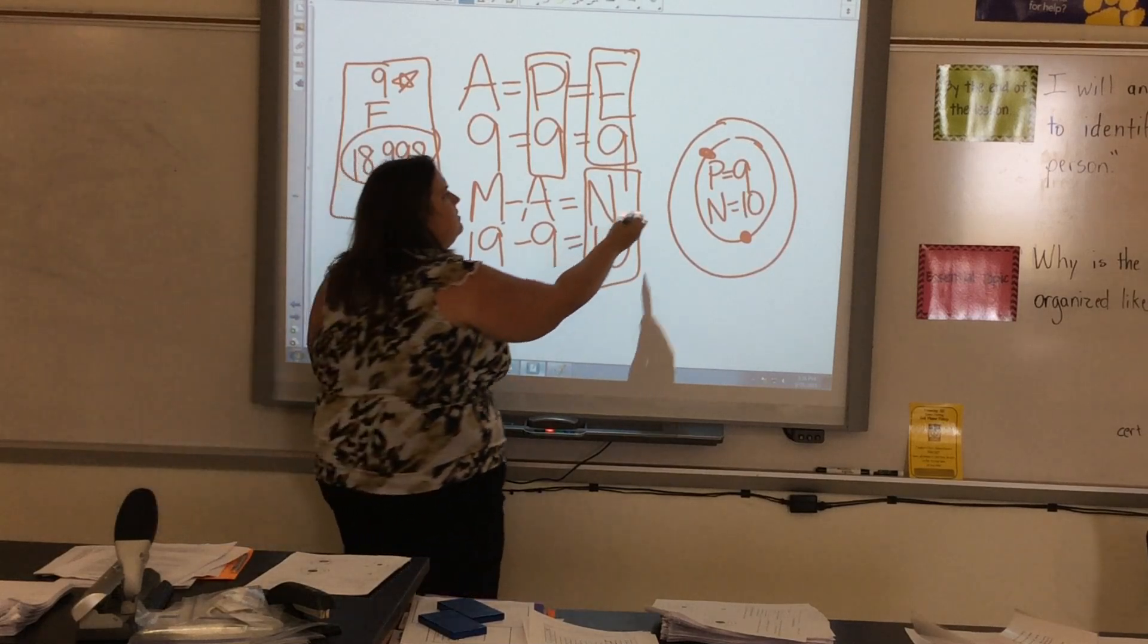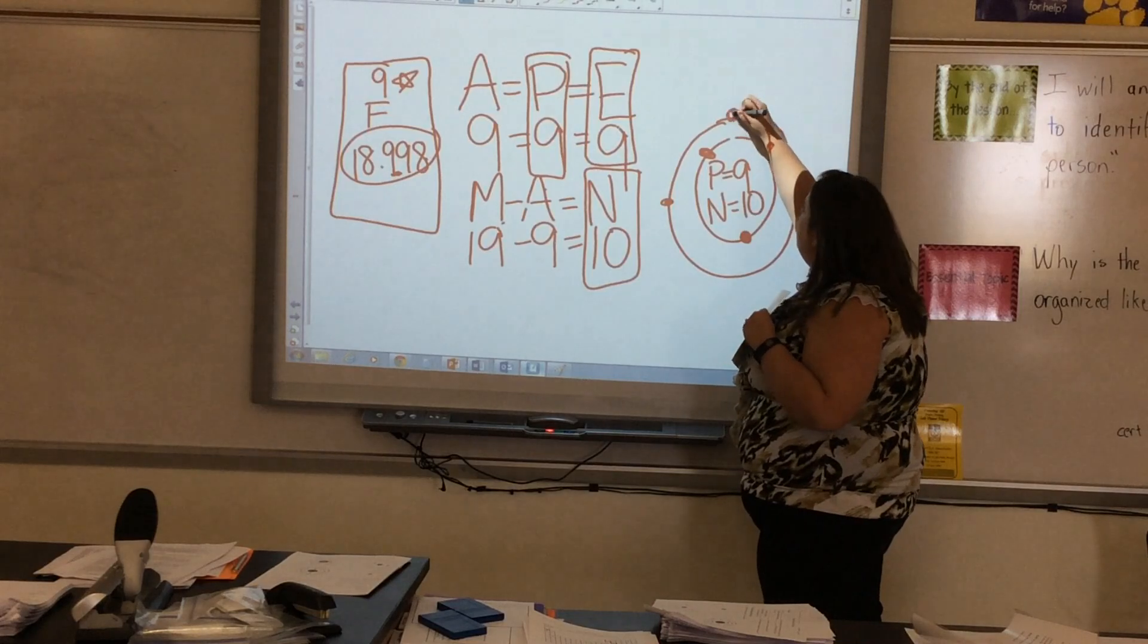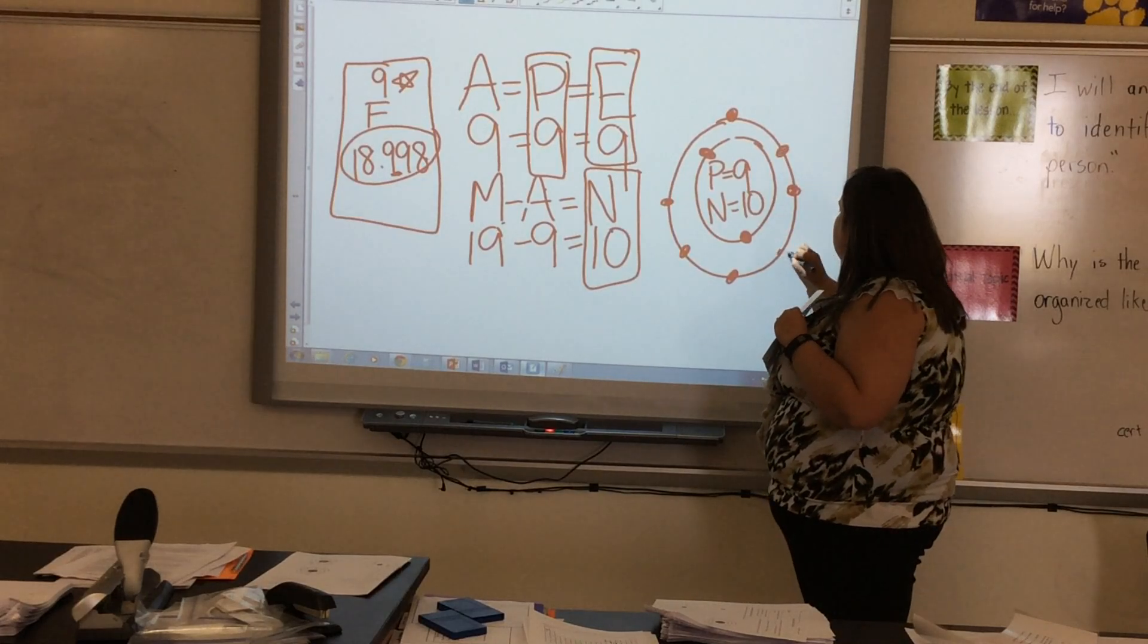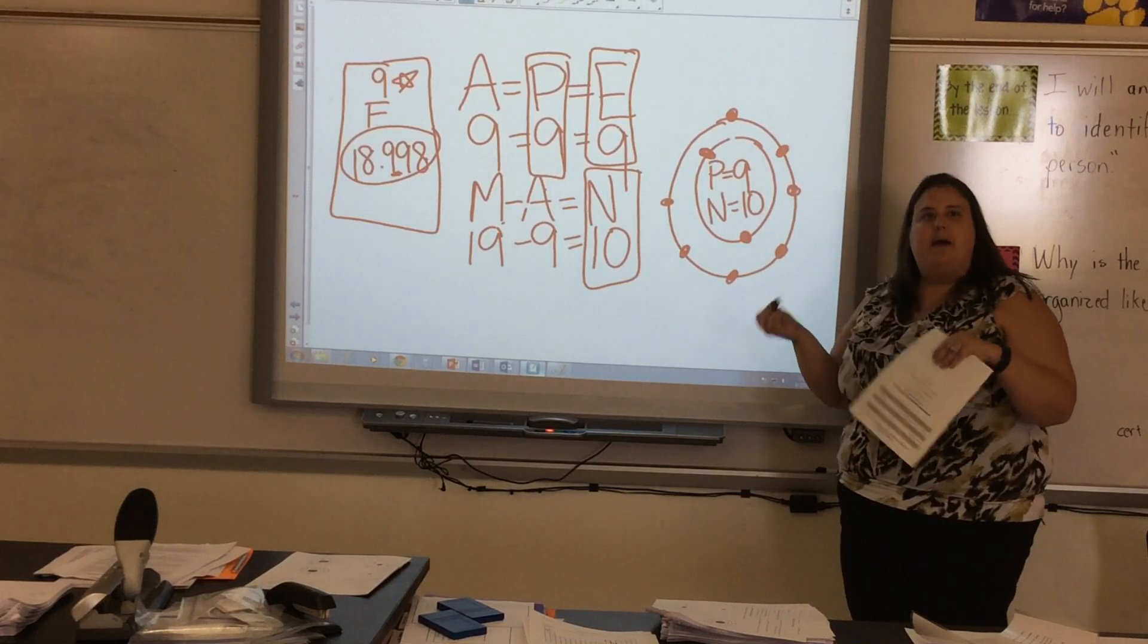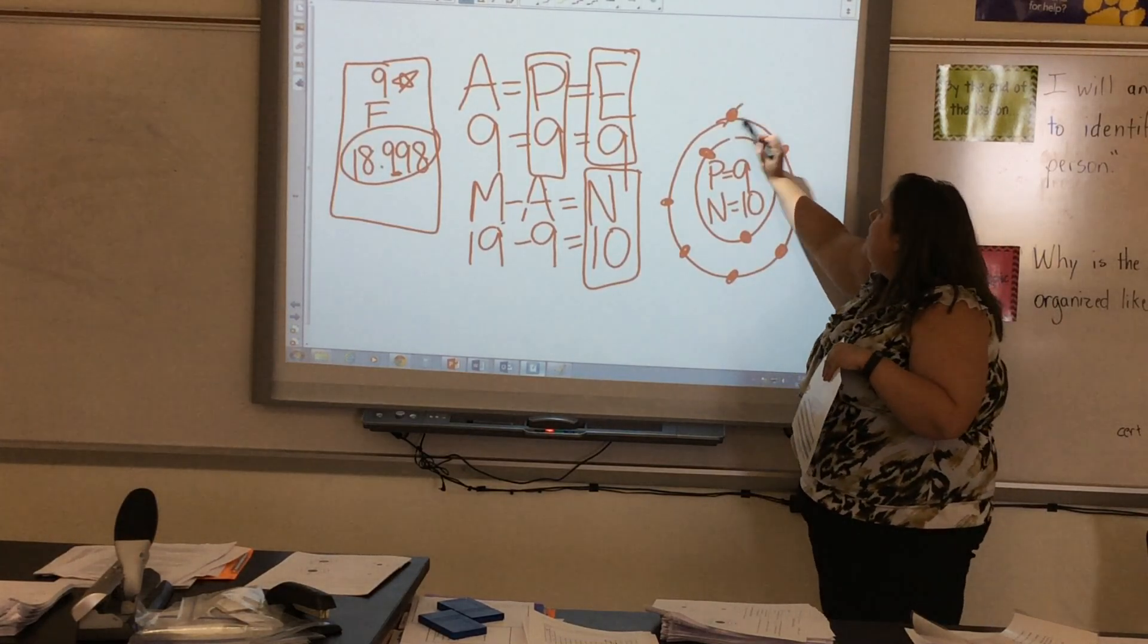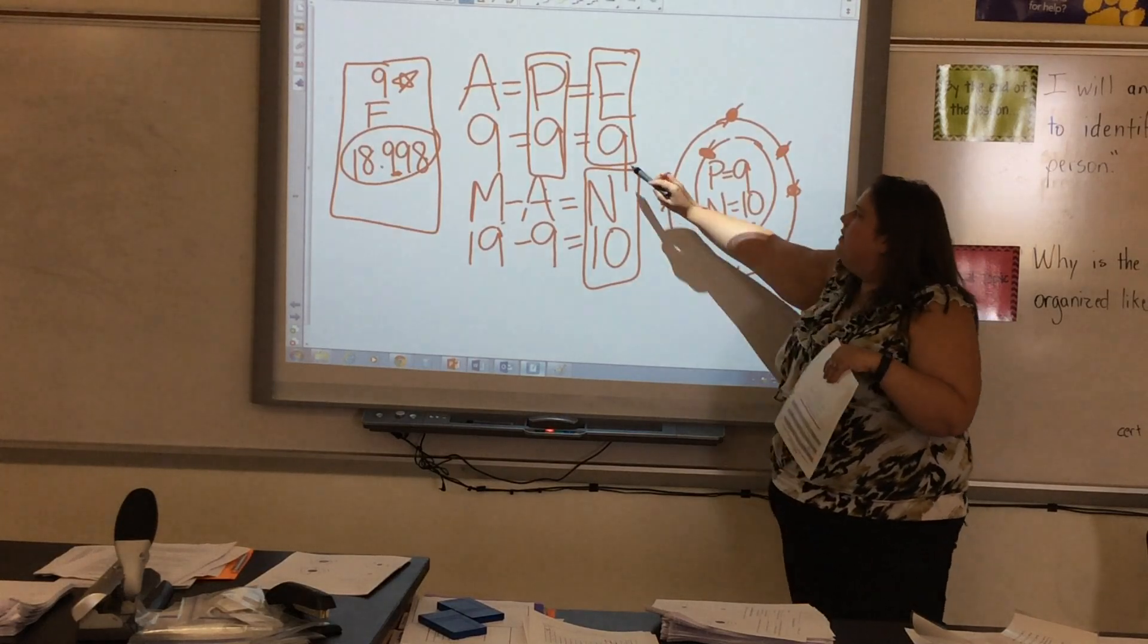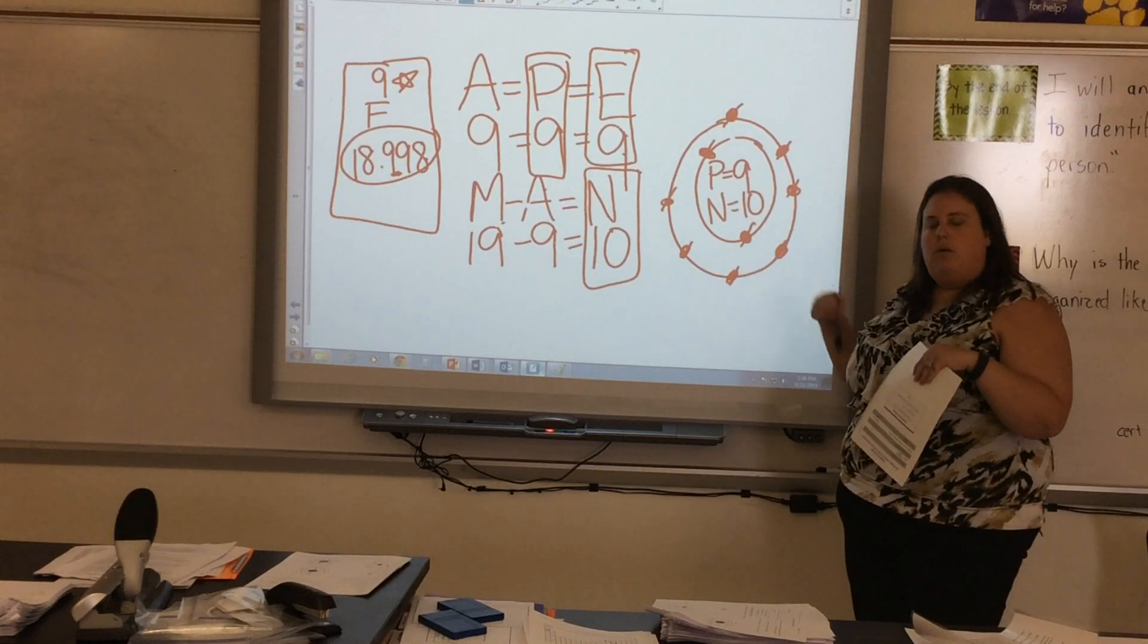So I need to make sure that I count. So 1, 2, 3, 4, 5, 6, 7. After I finish putting my electrons around, I want to go back and I want to count them to make sure that I have them correct. So 1, 2, 3, 4, 5, 6, 7, 8, 9. So I know that I have 9 electrons on my model. Okay. So pretty easy. We're going to go ahead and do another example.